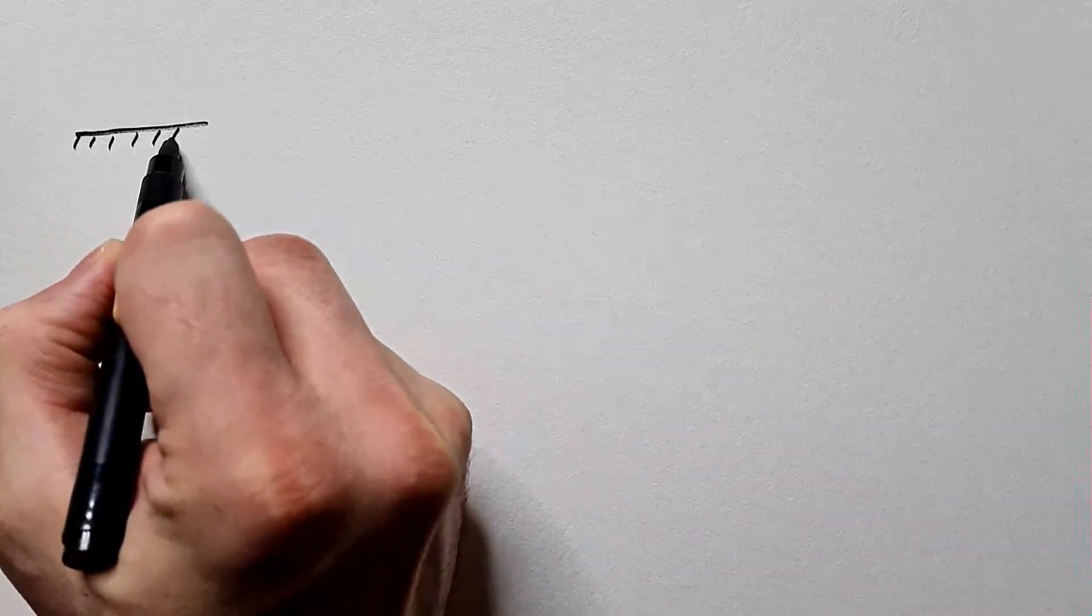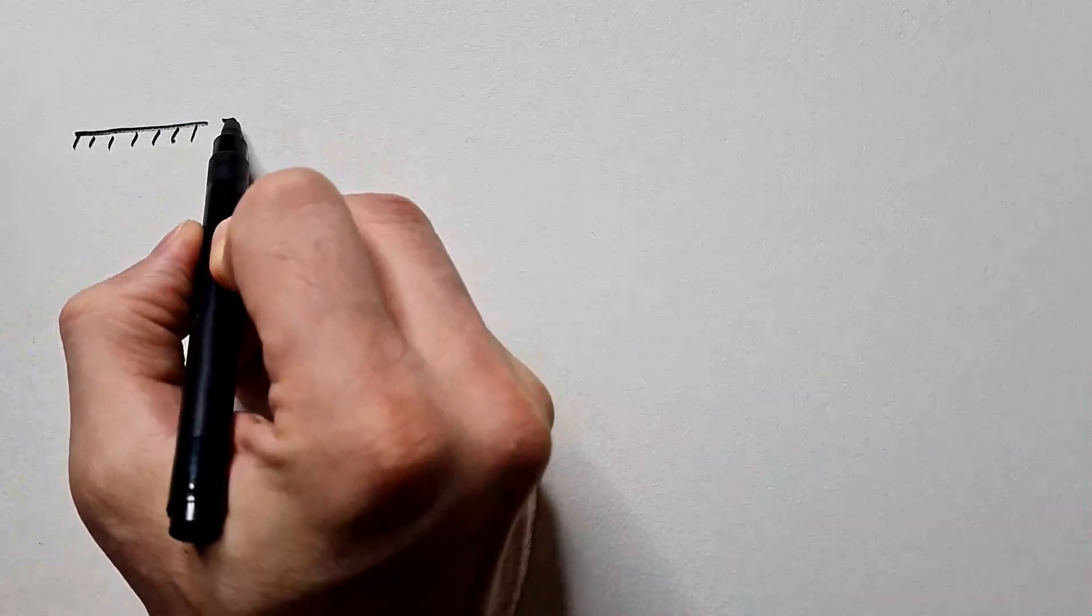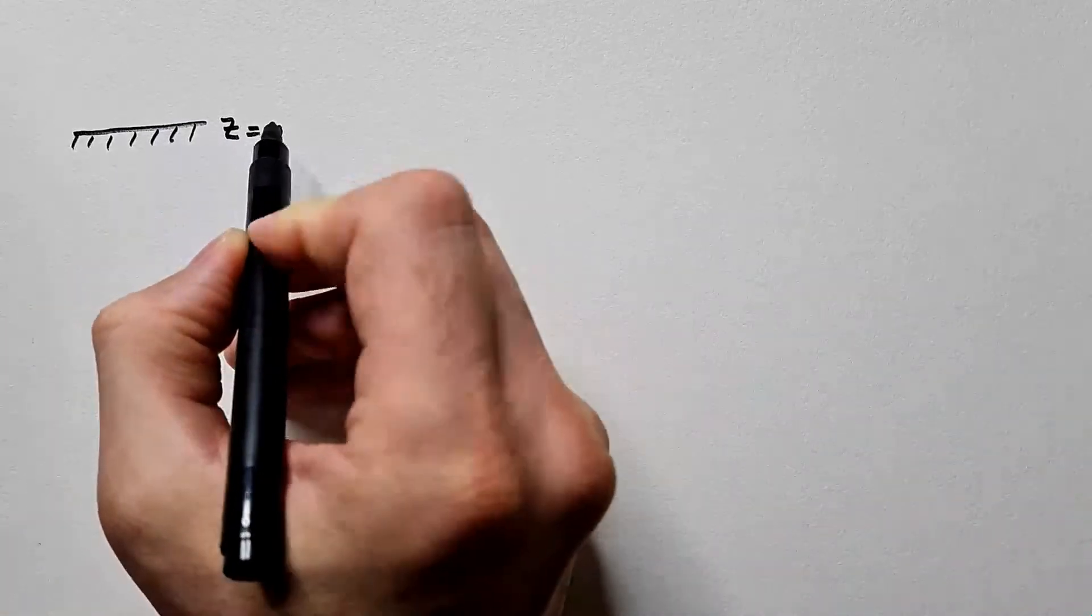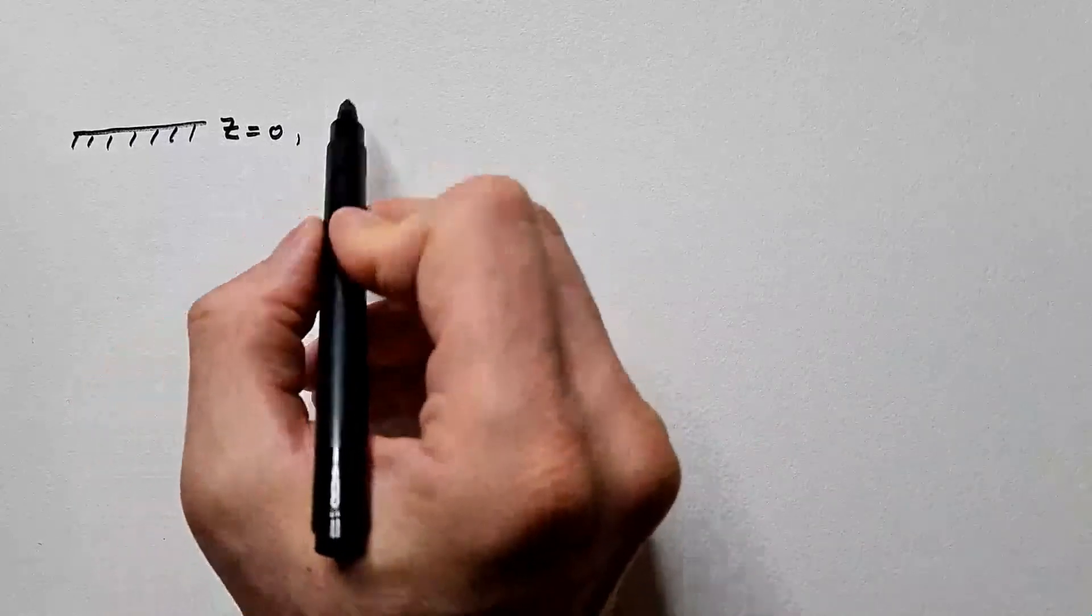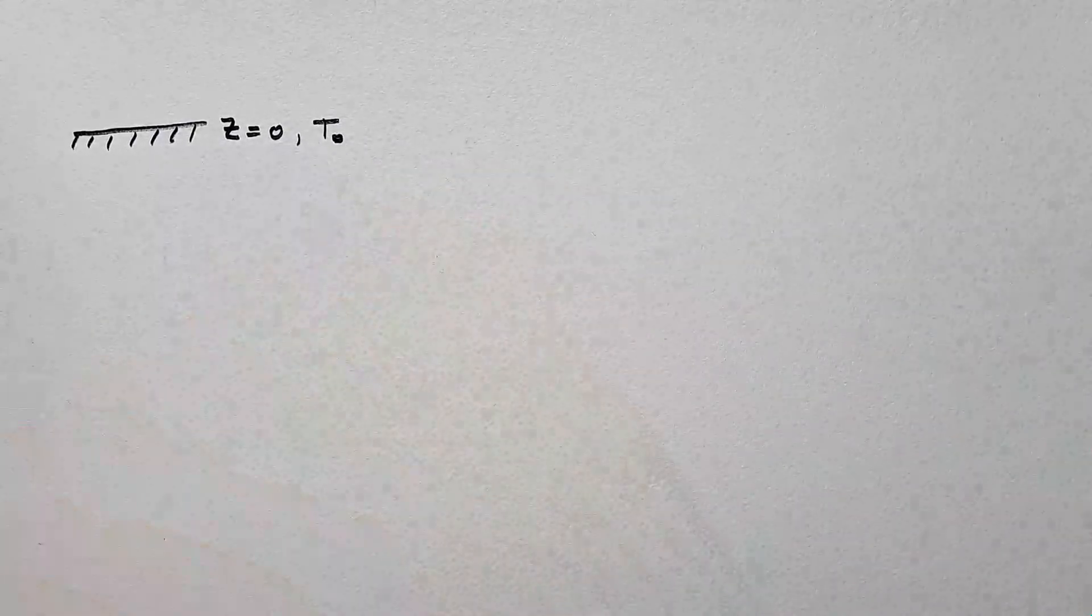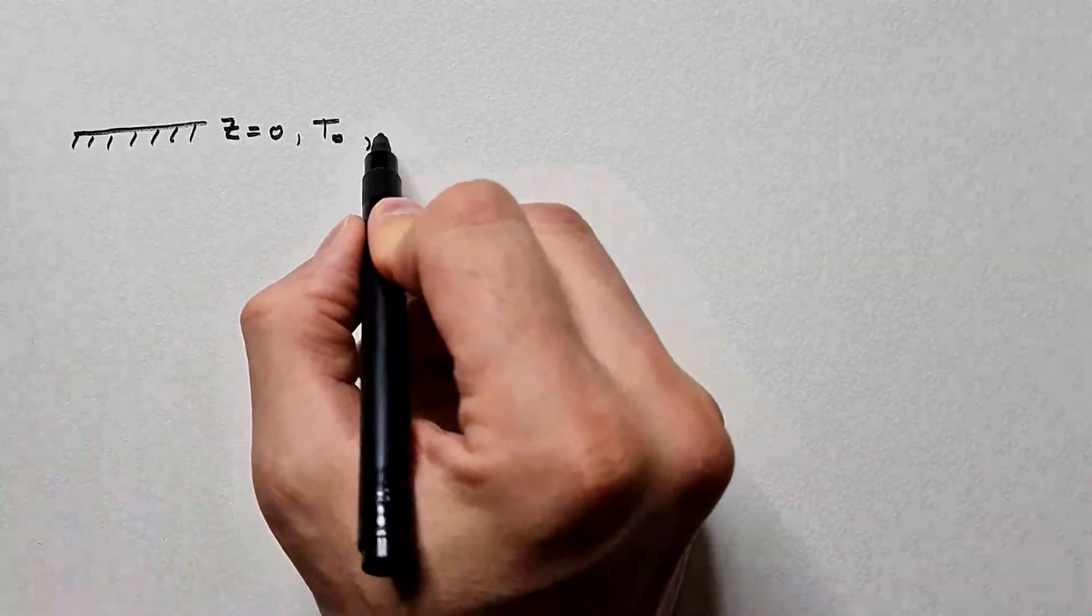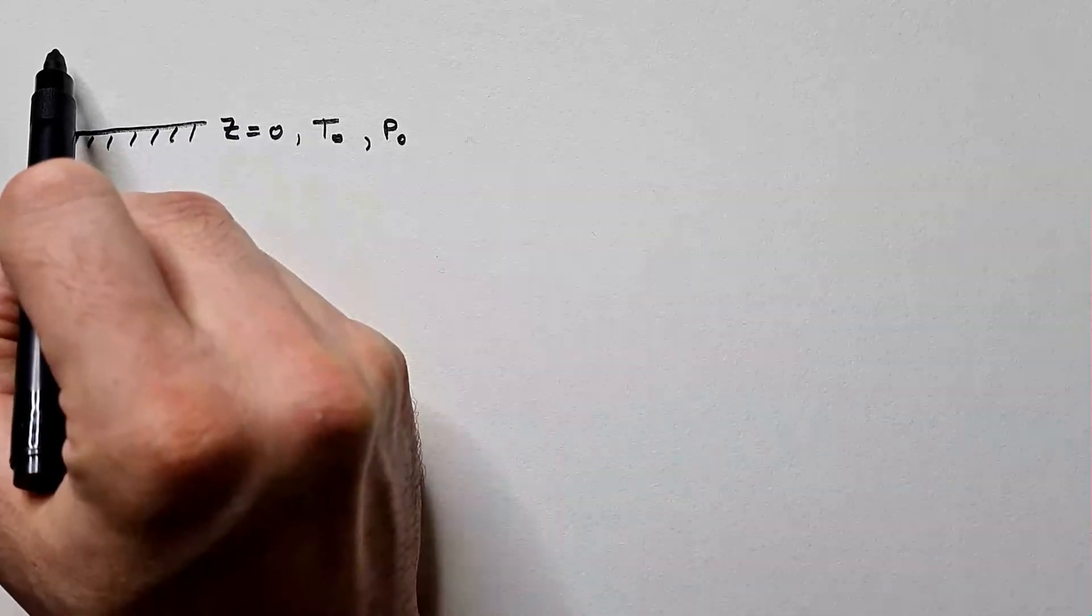Let's start by sketching our problem. Here we have surface of the Earth, height z equals 0, and we have some temperature T₀ at the surface as well as pressure P₀. Somewhere above